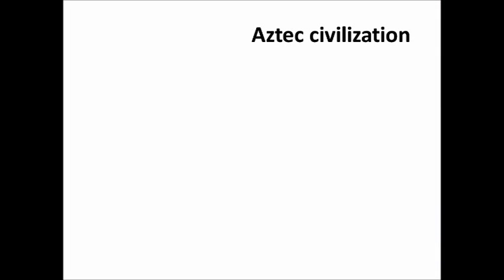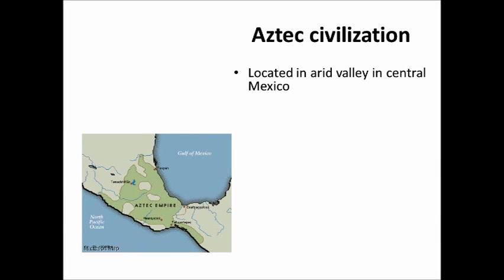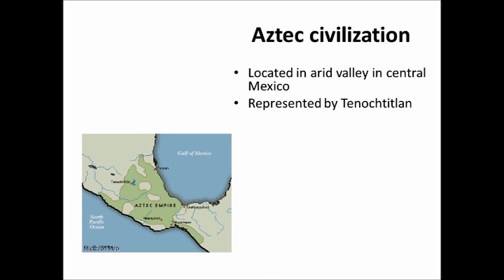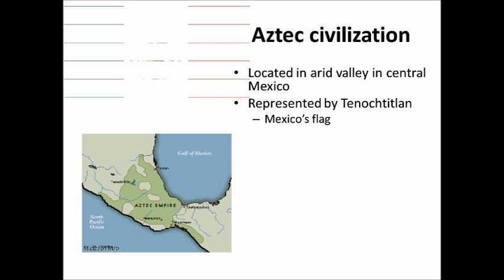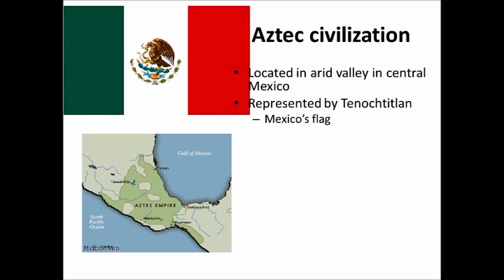The Aztecs were located in an arid valley in the area of central Mexico. There's a whole legend around why they picked their capital city of Tenochtitlan, which is actually located on an island in the middle of Lake Texcoco. The legend was that they should establish their capital where they found an eagle sitting on a cactus with a snake in its mouth — and they found that at Tenochtitlan. The Mexican flag represents this story.